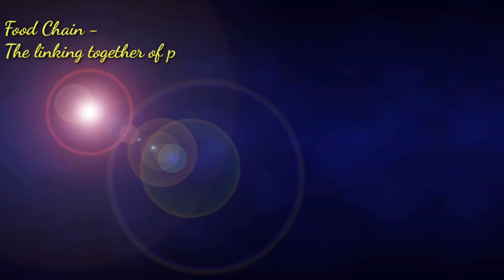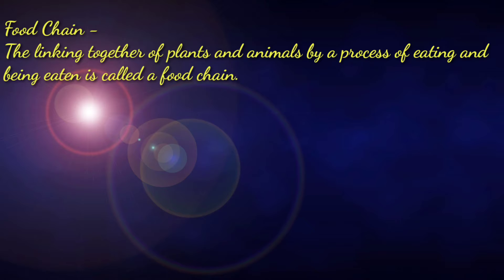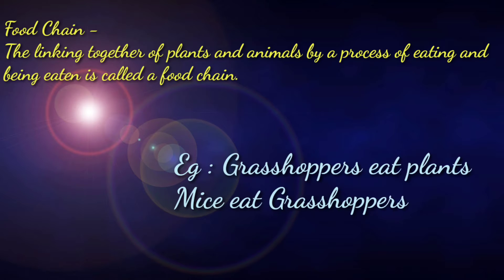All these things that make up the environment are connected to each other and depend on each other, so we say they are interdependent. The process of linking together plants and animals by a process of eating and being eaten is called a food chain. A common example is grasshoppers eat plants, mice eat the grasshoppers, and owls eat mice.